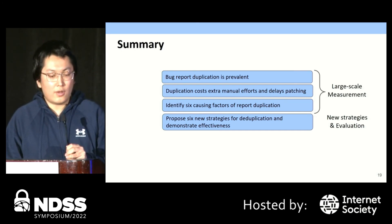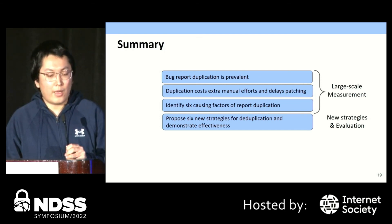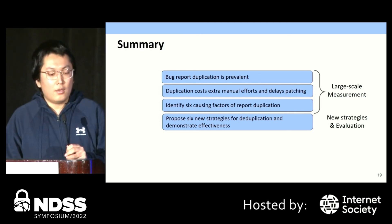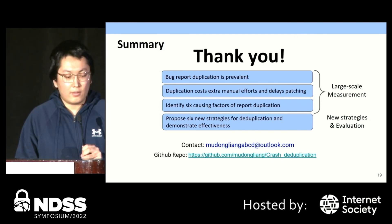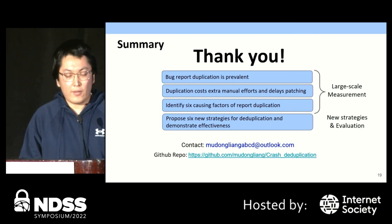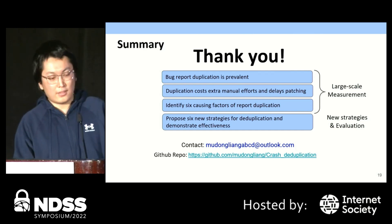To sum up, we conducted a large-scale measurement about bug report duplication. We discovered that bug report duplication is prevalent, that duplication costs extra manual efforts and time, and we identified six factors of bug duplication. Correspondingly, we proposed six new strategies for deduplication, and they work well both in evaluation and the real world. Thank you very much for attending. Feel free to contact us by email, and I'm happy to take questions now.